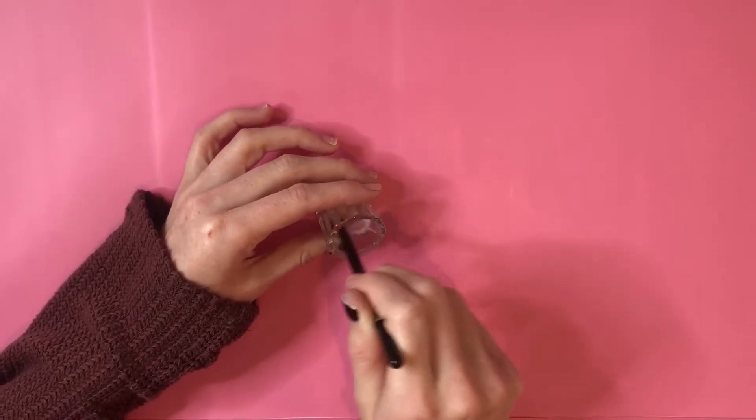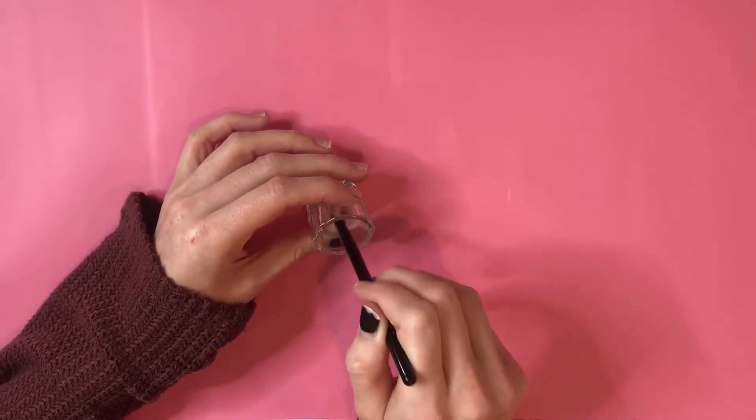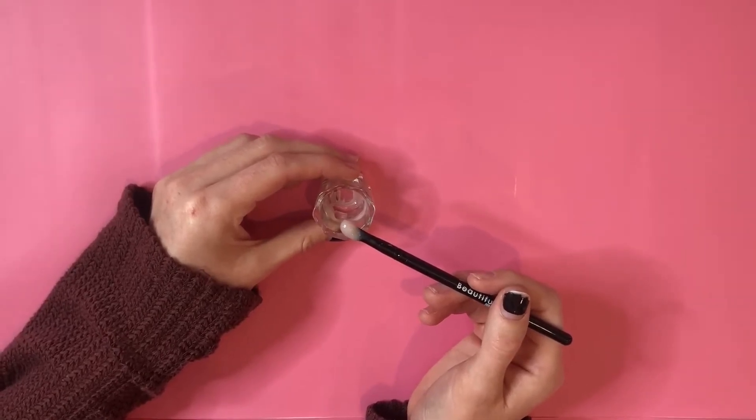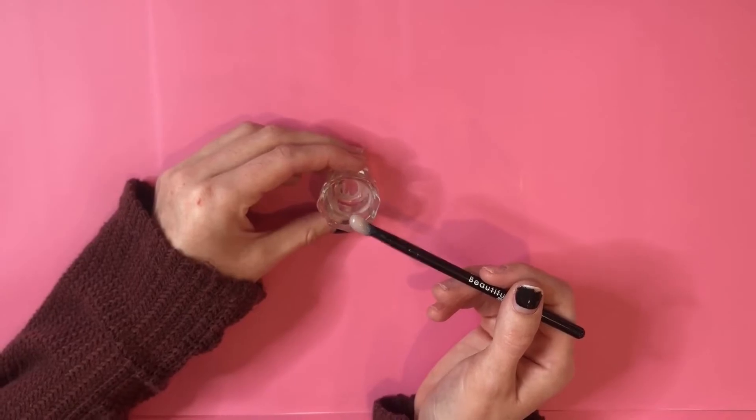You'll mix thoroughly and apply to brows and lashes. If you're applying tint after a lash lift or brow lamination, you can leave it on for three to five minutes depending on the hair or lash density.